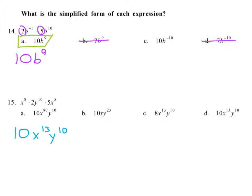So what do we get? We've got 10x^13*y^10, and that is D. Fast and easy.